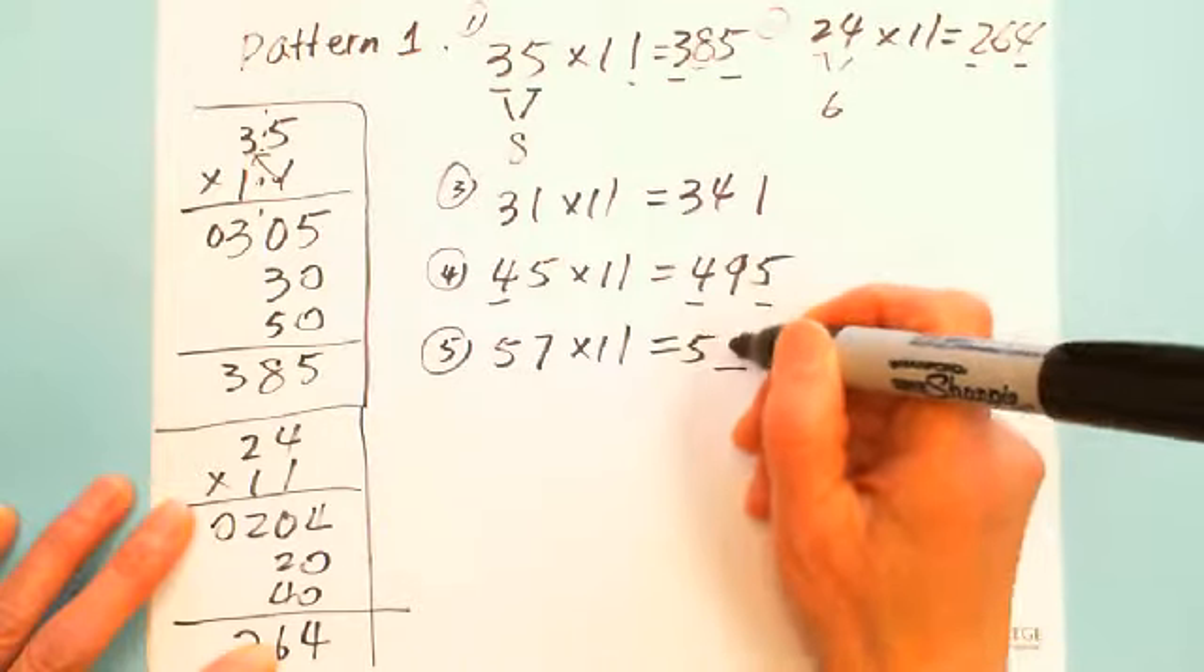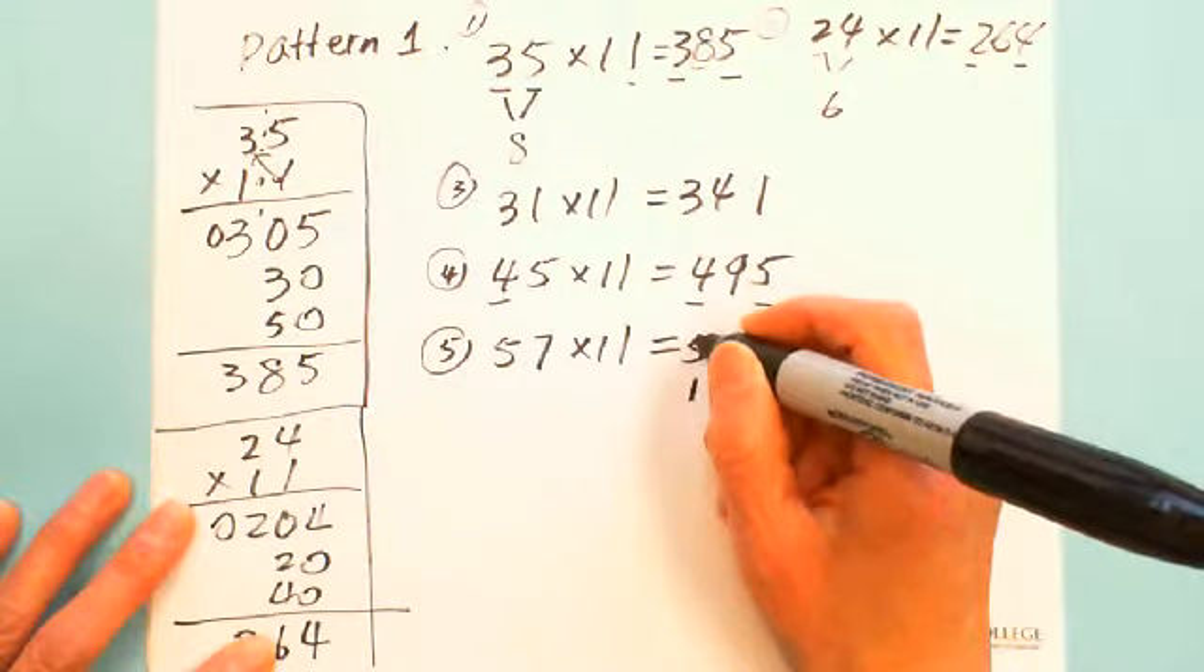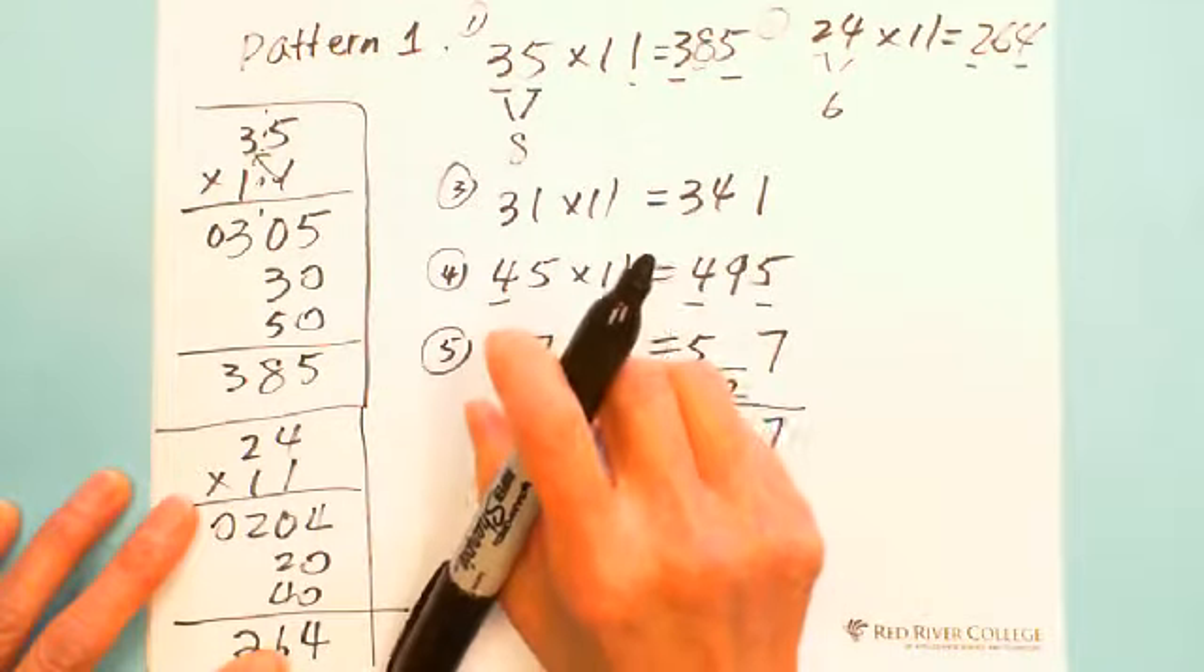What about if you have 57, which is times 11? The first is 5, the last digit is 7, the middle digit is 5 plus 7. You say, oh, 5 plus 7 is 12. So can I write 5, 12, 7? No. Because 5 plus 7 is 12, you need to carry 1 to the hundreds digit, which will give you 627. And you need to be careful when the sum of two digits is more than 10, you carry 1.